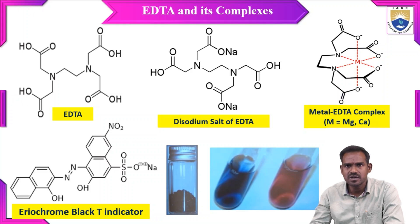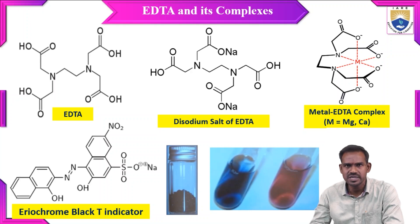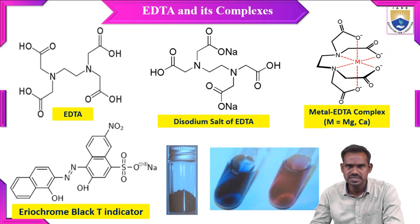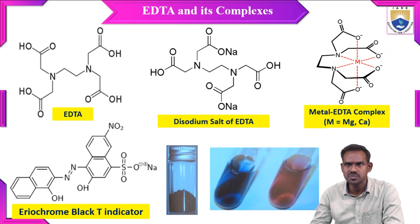The structure of the metal-EDTA complex shows the central metal coordinated by 6 donor atoms of EDTA — 2 nitrogens and 4 oxygens. Out of the 4 oxygens, 2 are initially in coordination with sodium in the disodium salt of EDTA. Both sodium atoms are replaced by the hardness-causing cation — either magnesium or calcium. The two oxygens previously bound with sodium are now bound by magnesium or calcium via covalent bonds. The remaining 2 oxygens and 2 nitrogens form dative or coordinate covalent bonds with the metal. So there are 2 covalent bonds and 4 coordinate covalent bonds in the metal-EDTA complex.